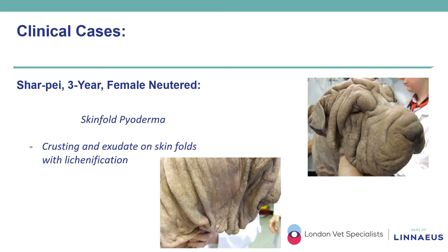Crusting and exudate present at the level of the skin folds with presence of lichenification were the clinical signs noted in a three-year-old female neutered Shar Pei. The lesions were also extremely pruritic. Associating the clinical signs with cytological findings, a diagnosis of skin fold pyoderma was reached. The anatomical conformation in specific breeds can predispose to localized or generalized skin disease. The presence of skin folds generates increased friction, humidity, pH and maceration, creating an environment favourable to proliferation of bacteria, with secondary bacterial and Malassezia overgrowth and infections then leading to the clinical manifestation.